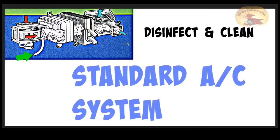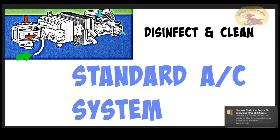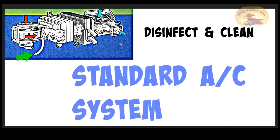This is a default system — they're designed differently for each car, but this is how it usually works. You have your air intake, your blower, your evap pipe, and your condensation drain pipe. This is where you will administer your foam and disinfectant. It will go into your air box through your evap, cleaning all that out and killing all the germs. None of it will go into any critical areas.